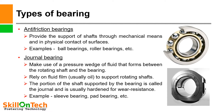Journal bearings rely on a fluid film — usually oil — to support rotating shafts. The portion of the shaft supported by the bearing is called the journal and is usually hardened for wear resistance. Examples are sleeve bearings, pad bearings, etc.